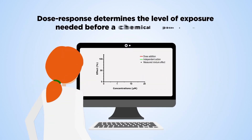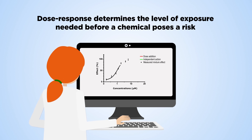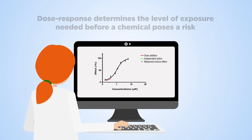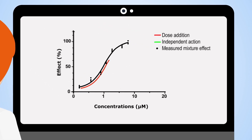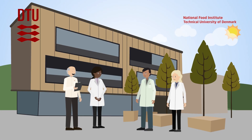Their activity is determined via a dose-response study. Here, researchers determine the level of exposure needed before a chemical poses a risk. Assuming these chemicals behave additively, their curves can be added to predict how they'll affect the body in a mixture.